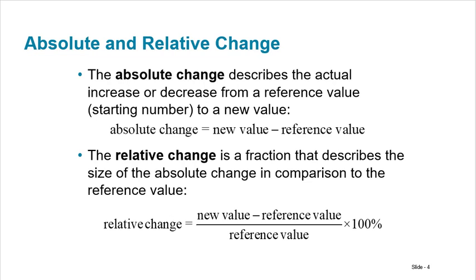Now there's absolute change and relative change. Absolute change is just an amount — the pure change. So if the price of a shirt went from $40 to $30, that was an absolute change of negative $10. But the relative change is the absolute change divided by the starting point, so that's 10 over 40, which is one-fourth — a 25% reduction. Relative change is when you turn it into a percentage by dividing by the reference value, which is just where it started. If you started at $40, that becomes your reference value.